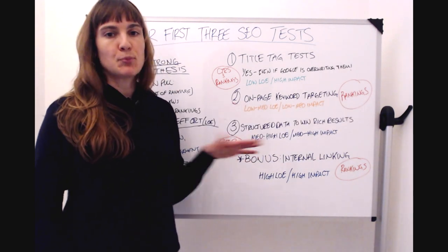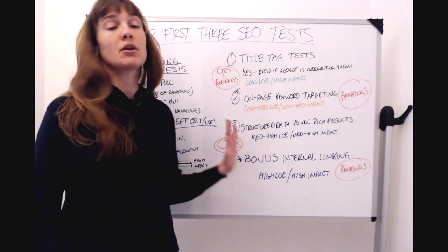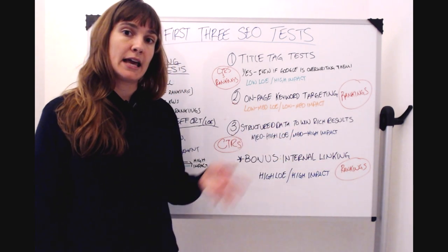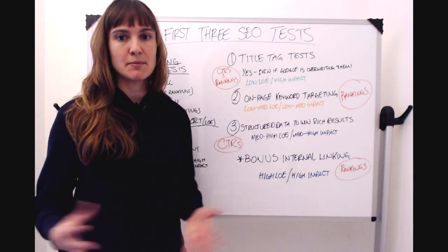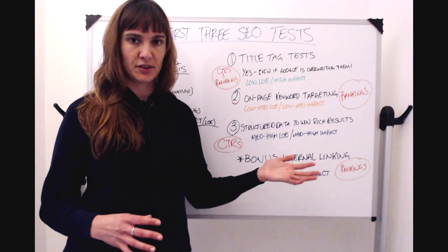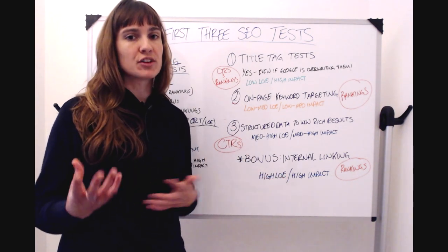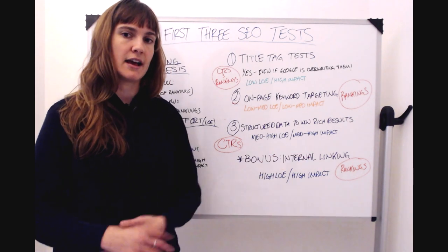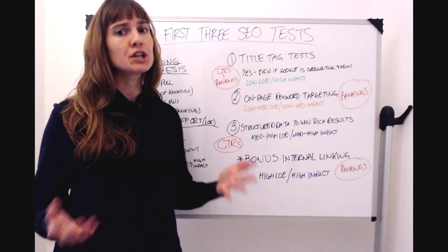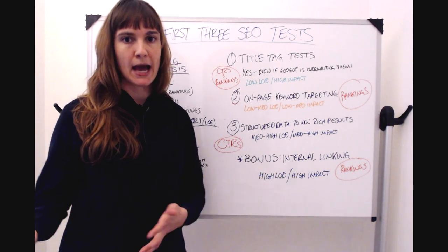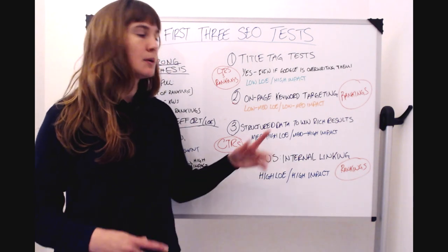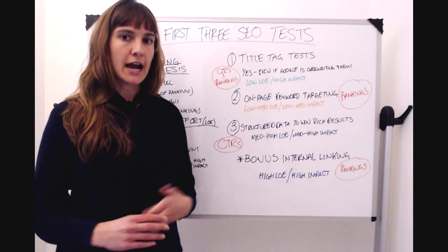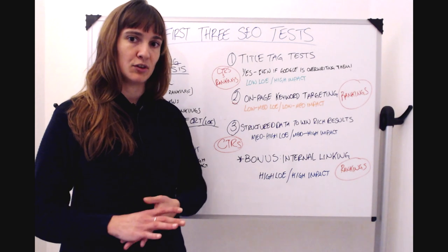Third, I've put structured data to win rich results. These are medium to high level of effort, but also medium to high impact. So this is things like adding schema, review schema to get review snippets. They tend to involve a little bit more effort because oftentimes you might need engineering resource to get that schema into your HTML, or you might need to get the data somehow that you want to include in the structured data, but they're important SEO tests and they tend to have a little less lift than other higher impact tests that are also higher level of effort.